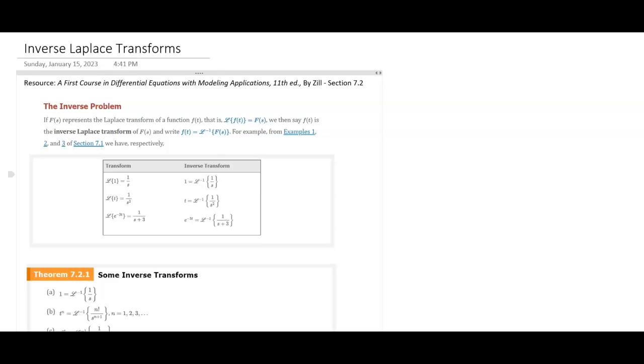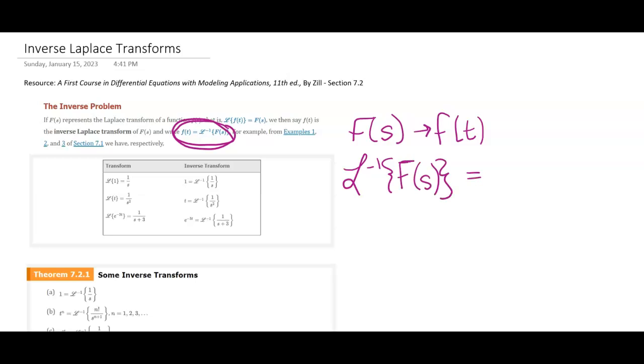So if we have Laplace transforms, then it would make sense that we have inverse Laplace transforms. We want to know how do I get from big F of S back into little f of t. And so little f of t must be the inverse Laplace of big F of S, where we say inverse Laplace of big F of S is what gets me back to my original function.